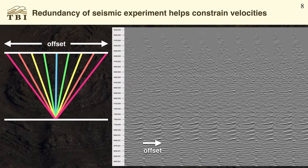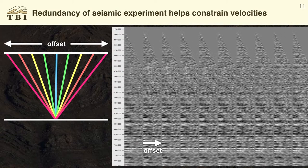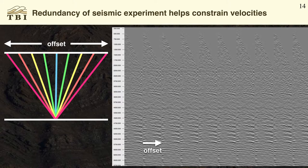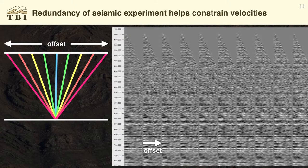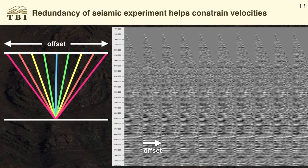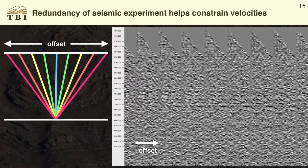Here's an offset image gather where offset increases from left to right. You can see upward curvature on the gather, which indicates the velocity is too low — we need to increase our velocity to flatten that image gather. If we increase further, we'll over-correct and have a significant curvature again. Looking at this it seems pretty easy to tell when the image gather is flat, indicating an accurate velocity model, but this is not the common case in an overthrust setting because of geologic complexity and near-surface conditions.